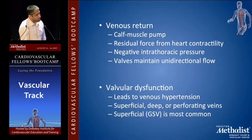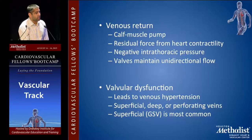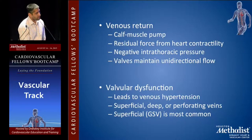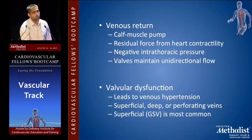Venous return is based on the calf muscle pump to push blood out, residual force from heart contractility, and negative intrathoracic pressure that helps pull blood up. Valves maintain unidirectional flow. When you have valvular dysfunction, it leads to venous hypertension — in the superficial veins, deep veins, or also in the perforating veins.